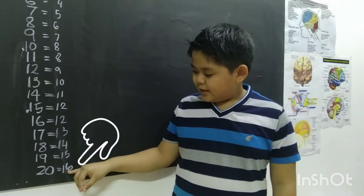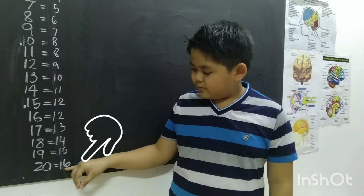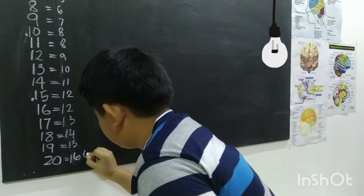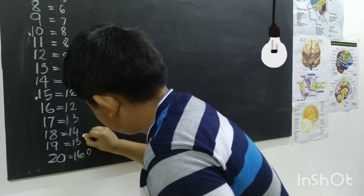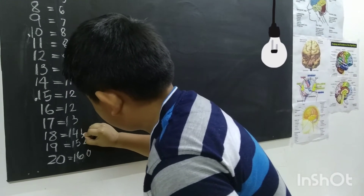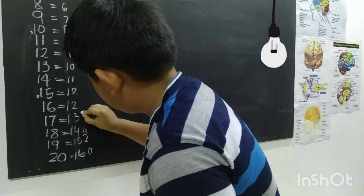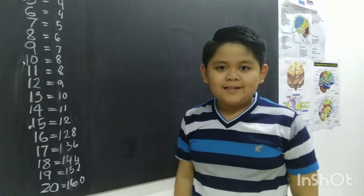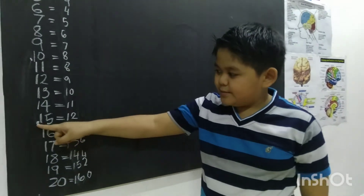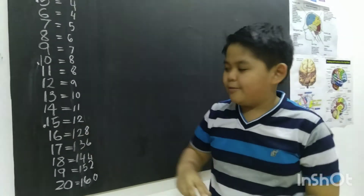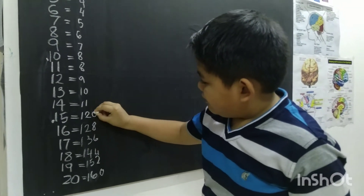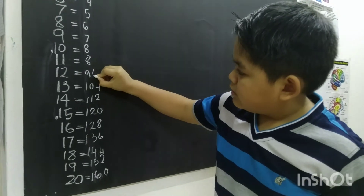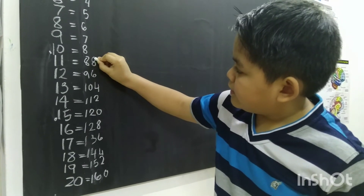Here, let's count by twos, starting with zero. Zero, two, four, six, eight. Now guys, this mark means we have to start over again with zero. Zero, two, four, six, eight.